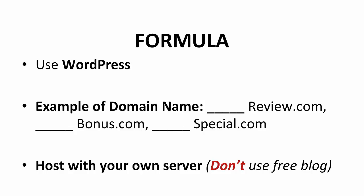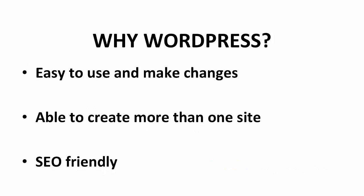Even a novice can create a good site. The examples of domain names such as somethingreview.com, somethingbonus.com, or somethingspecial.com — these are examples of the domain names I usually use for my review pages. Remember to host it with your own server. Don't use free blogs such as whatever.wordpress.com — register your own domain and server. WordPress is the easiest software I can find for creating a website. You can make changes to your website anytime, and you are able to create more than one site with WordPress. You can create another review page using WordPress in the future to promote other products. Most importantly, WordPress is SEO friendly — you can install a plugin to keep track of the SEO of your site.